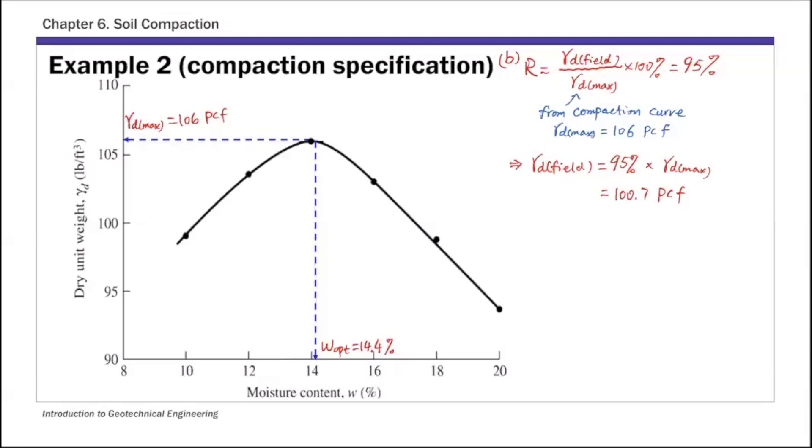So let's plot this gamma d field on this curve. So this is gamma d, that's 100.7, so that's gamma d field. So if you draw a horizontal line corresponding to that gamma d field, this line is going to intersect compaction curve at two points. You have one intersection here and one intersection here. And then if you look at this compaction curve, for moisture content between these two points, the curve is above this gamma d field. So you have this portion.